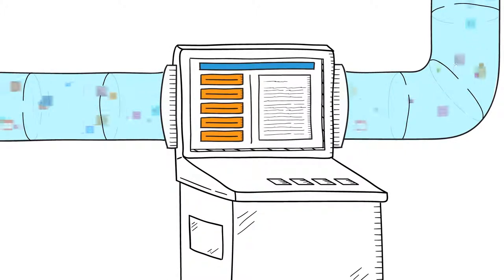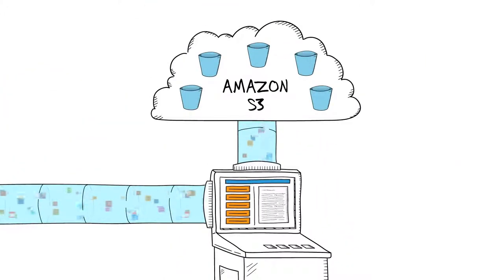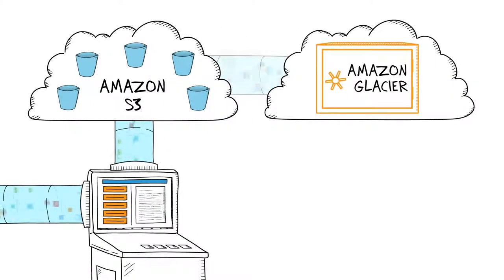You can use the AWS SDK to upload data directly to the service. If you use Amazon S3, you can use S3 lifecycle policies to automatically archive cold data to Amazon Glacier.